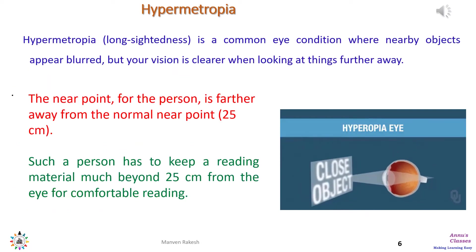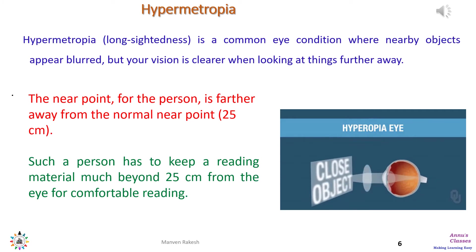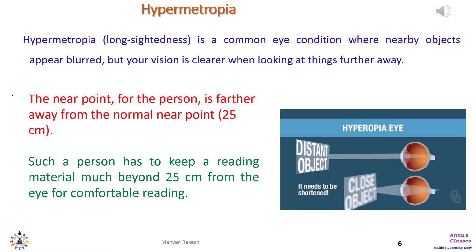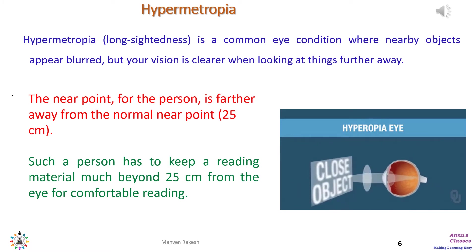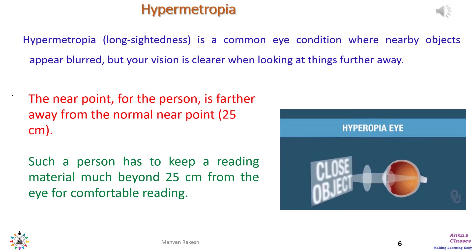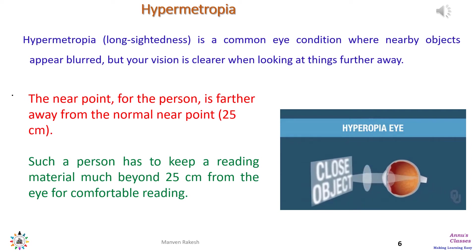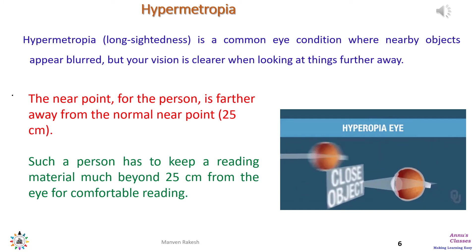Let us now understand another eye defect — hypermetropia, or long-sightedness. This is a common eye condition where nearby objects appear blurred but vision is clearer when looking at things further away. The near point for a hypermetropic person is further away than the normal near point of approximately 25 centimeters. The person is not able to see close objects clearly but is able to see distant objects very clearly.